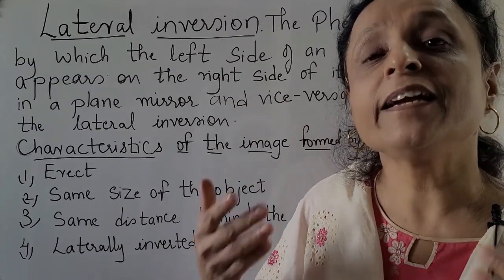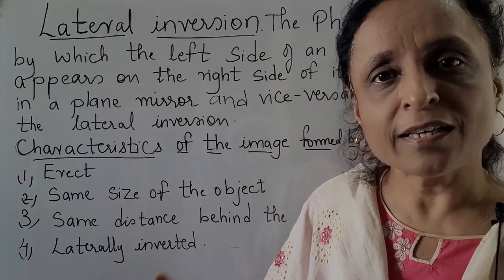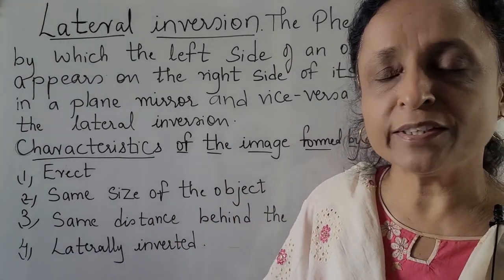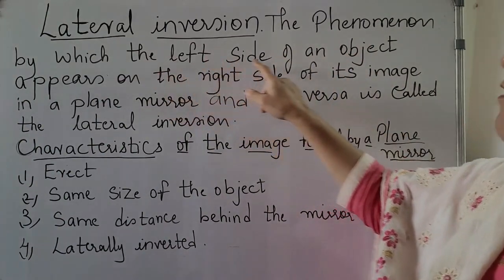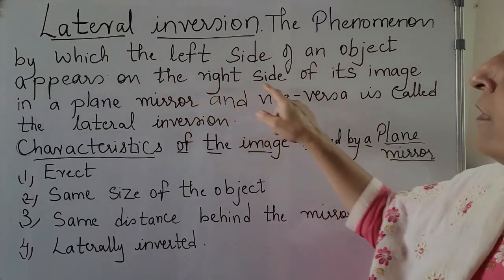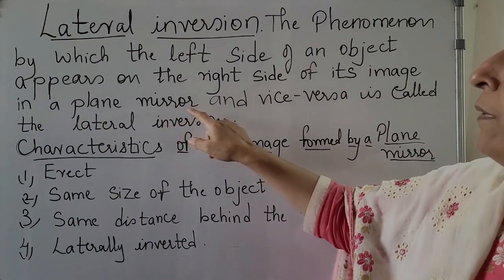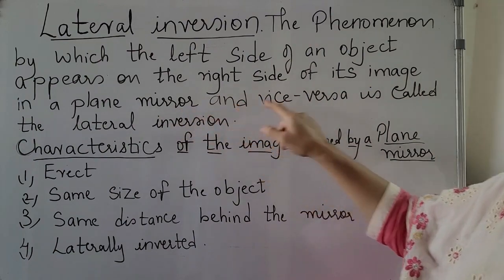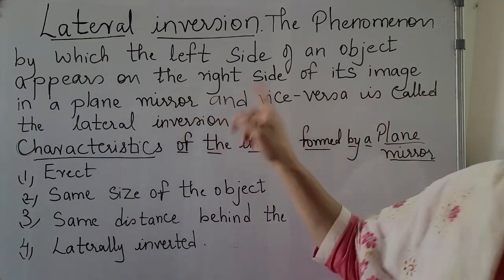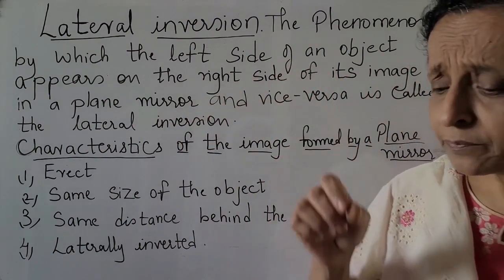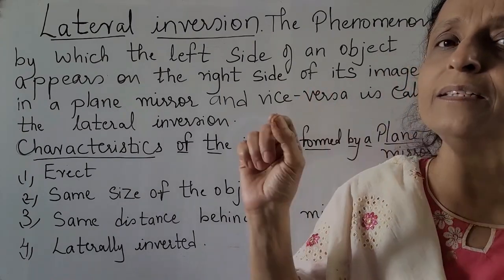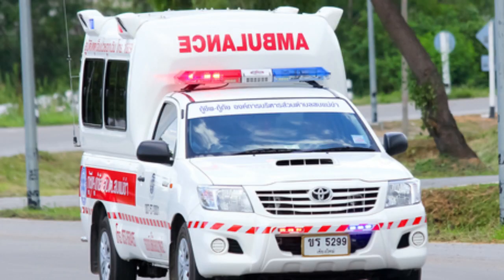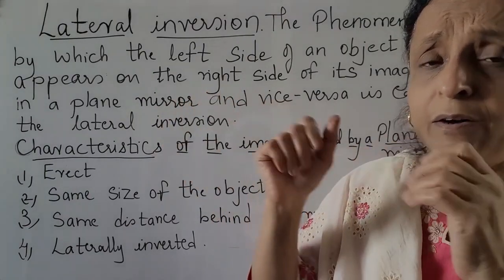When you look into the mirror and raise your right hand, your left hand seems to be raised, and when you raise your left hand, your right hand seems to be raised. Because of lateral inversion, the image you see in the plane mirror is laterally inverted. That is what lateral inversion is — it is a phenomenon by which the left side of an object appears on the right side of its image in a plane mirror, and vice versa.